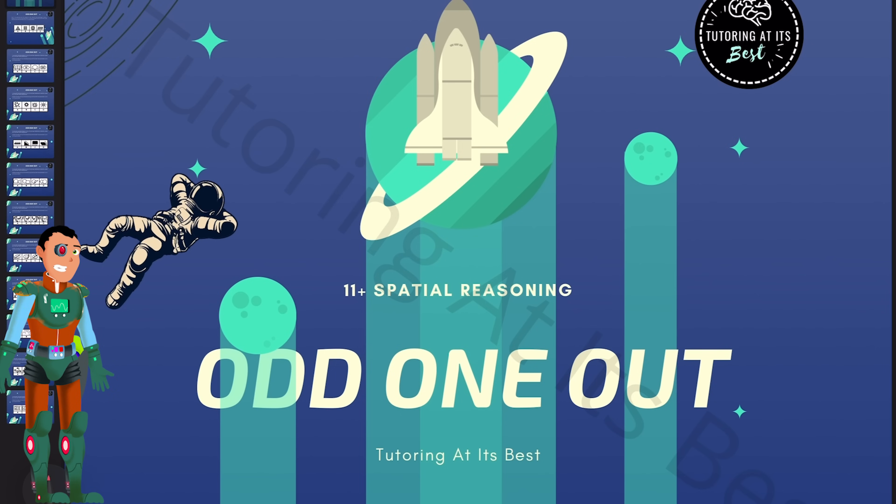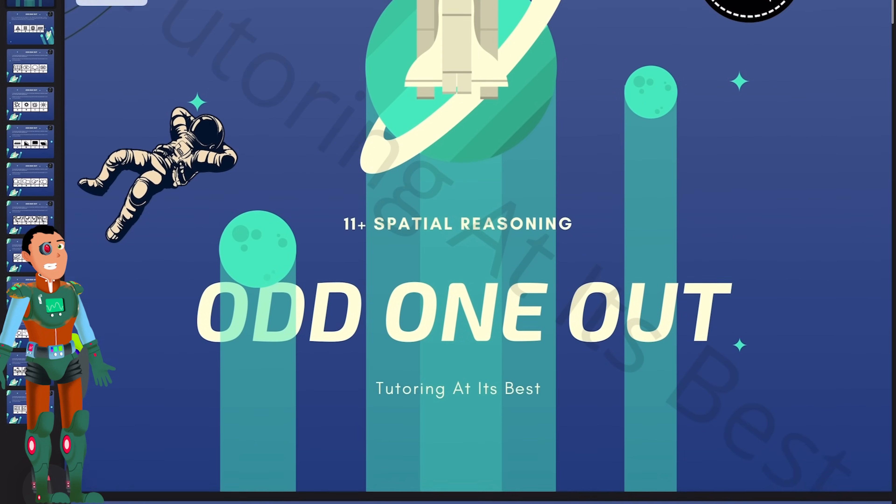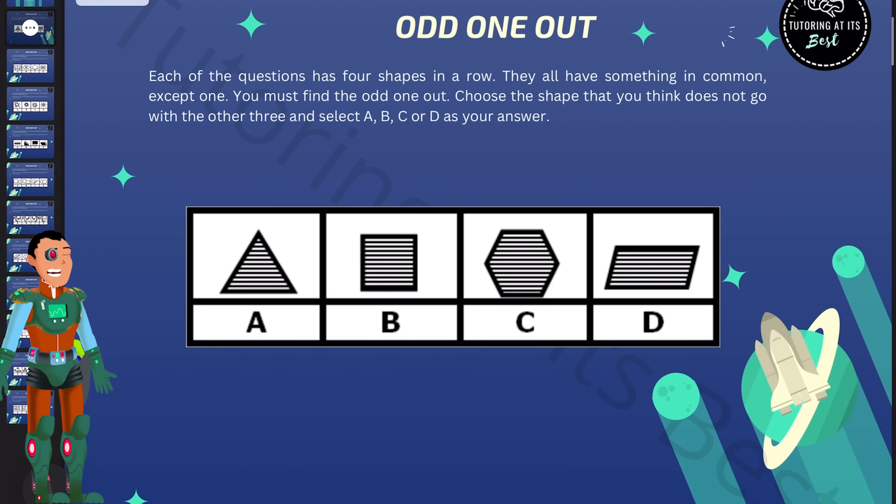Let's put on our thinking caps and discover the hidden patterns together. So what do we do in this topic? Well, if the thing is different to the rest, it is known as the Odd One Out.